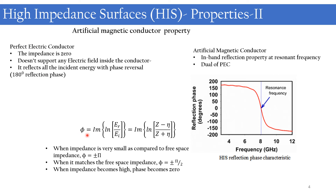This equation is used to calculate the reflection phase of high impedance surfaces. The reflection phase is related to the surface impedance and free-space impedance η by: reflection phase = Im{ln[(Z − η)/(Z + η)]}. When the impedance is very small compared to free-space impedance, the reflection phase becomes ±180°. When the impedance matches the free-space impedance, the reflection phase will be ±90°.